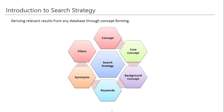What is a search strategy? In one line: if you are getting a relevant result from any database through your search string, that is an example of a search strategy. Forming that search string or inputting the keywords that deliver relevant results is an art we have to learn. As you can see in this diagram, a search strategy ideally consists of core concepts, background concepts, keywords, synonyms, and filters. These three elements form a good search strategy.